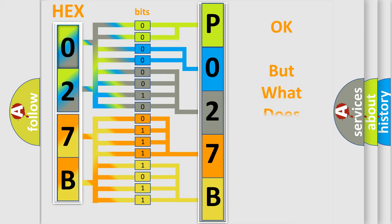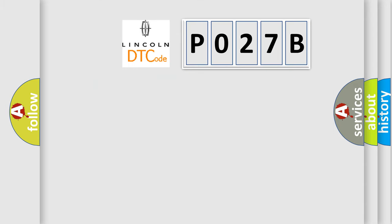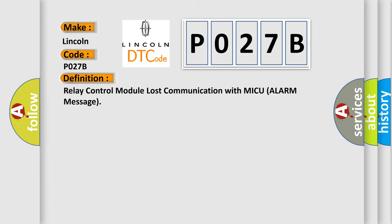The number itself does not make sense to us if we cannot assign information about what it actually expresses. So, what does the diagnostic trouble code P027B interpret specifically for Lincoln car manufacturers? The basic definition is: Relay control module lost communication with MICU alarm message.